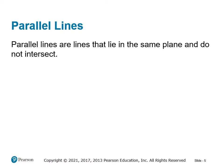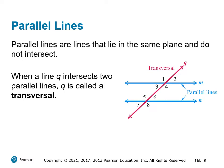Parallel lines are lines that lie in the same plane and do not intersect — this is probably a review. When we have a line that intersects both of these parallel lines we call this a transversal. You can see this in the diagram in red; line Q is called a transversal. All of the angles created by the two parallel lines and the transversal are labeled here, and we're going to go through the relationships between different types of angles.